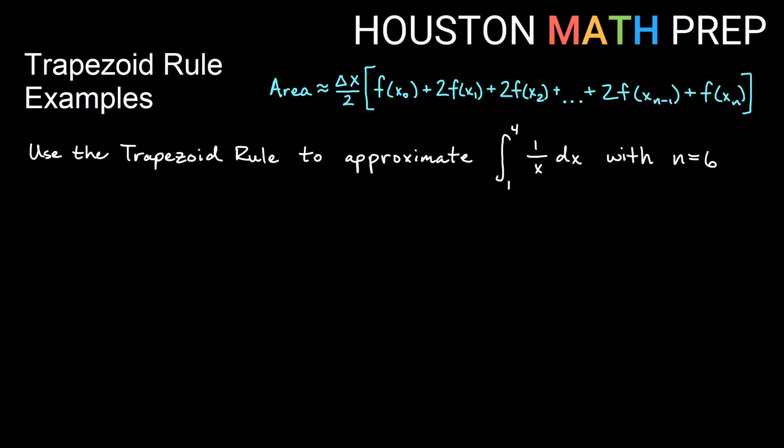Welcome back to our example video for trapezoid rule approximations. In this example, we're using trapezoid rule to approximate the integral of 1 over x dx from 1 to 4. So our a is 1, our b is 4. We're going to use 6 trapezoids to approximate this.